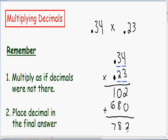However, we only have three numbers — one, two, three — and since we need four numbers to the right of the decimal point, we need to add a zero. So now we have four numbers to the right of the decimal point and we have a final answer of 0.0782.